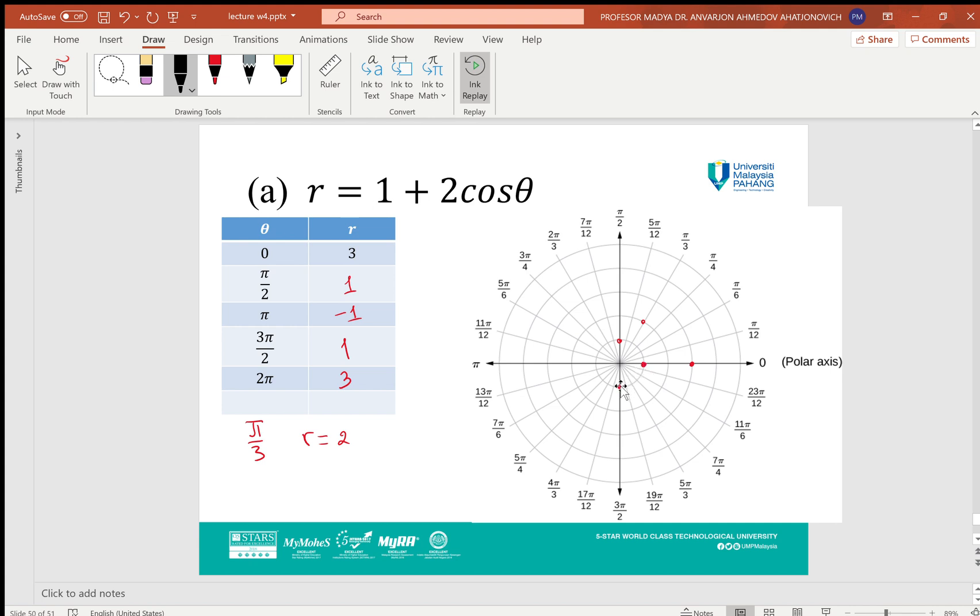At 3π/2, it is 1 again. Then at 2π, it's 3. So we got these points and you can sketch.